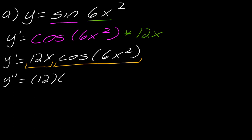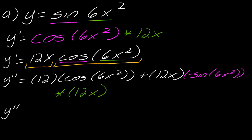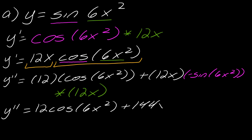Derivative of 12x is 12, and then I leave the second function intact. Then I leave 12x alone and take the derivative of cosine of 6x squared. The outermost function is cosine, the innermost is 6x squared. The derivative of cosine is negative sine, and I leave the 6x squared alone, then multiply by the derivative of the inside, which is again 12x. Simplifying, this will be 12 cosine of 6x squared minus 144x squared sine of 6x squared.